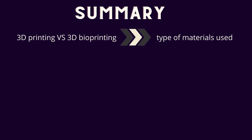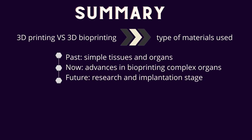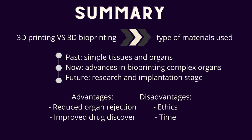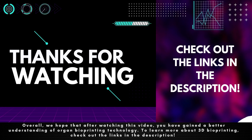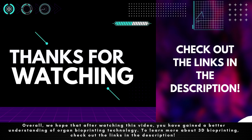To recap some of the major points discussed in this video: the key difference between regular 3D printing and 3D bioprinting is the type of materials used. Organ bioprinting has come a long way — early on, we were only able to implant simple tissues and organs like cartilage and bladders. Nowadays, there have been incredible advances in research for bioprinting complex organs like kidneys, however more research is still required before they reach the implantation stage. There are a number of advantages to this technology, including reduced organ rejection and improved drug discovery methods, along with some disadvantages concerning ethical issues and long processing time. Overall, we hope that after watching this video you have gained a better understanding of organ bioprinting technology.